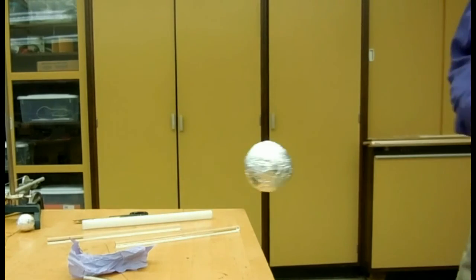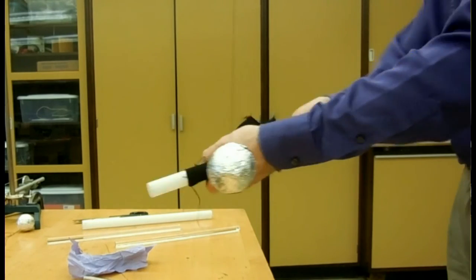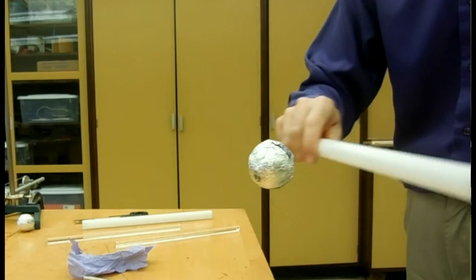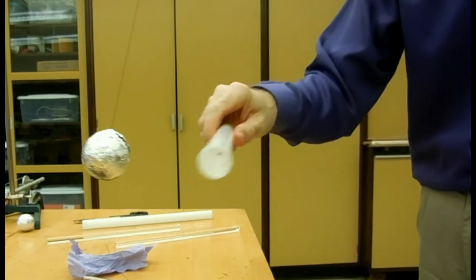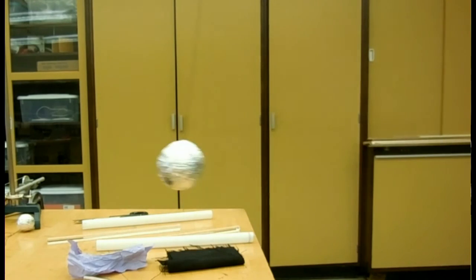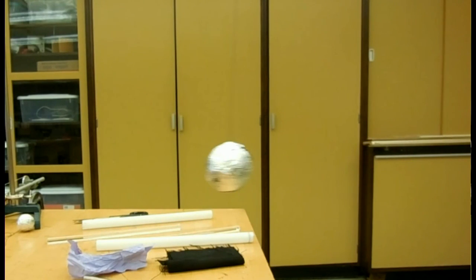But now I'm going to charge up a plastic rod. This plastic rod will be negatively charged. And watch. It quite clearly repels that metal ball. So the metal ball is now negatively charged.